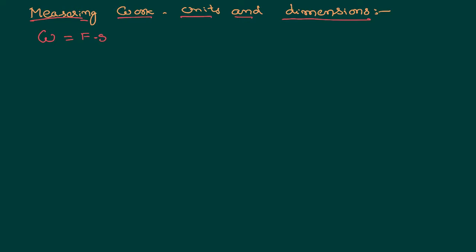If you want to write a dimensional formula for work done, we have to write a dimensional formula for force as well as displacement. We can further write force as mass into acceleration, and displacement. We can further write acceleration as rate of change of velocity, and velocity as rate of change of displacement.